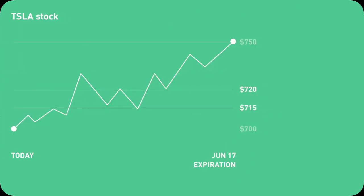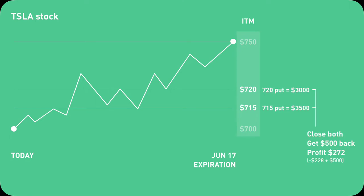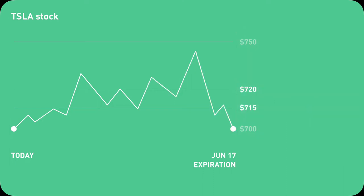By expiration date, if Tesla's stock is above $720 — just like you imagined, just like you hoped — let's say it ends at $750, you win. The $715/$720 call option contracts will be fully in the money, so their price will become $3.5K and $3K. You can close the position or let your broker close it for you — not recommended, but it's an option. Either way, you will get $500 back, giving you a profit of $272. If Tesla's share price ends at $700, below your lower call strike price of $715, both call option contracts become worthless — zero — meaning you lose all $228. And that's the end of your spread.